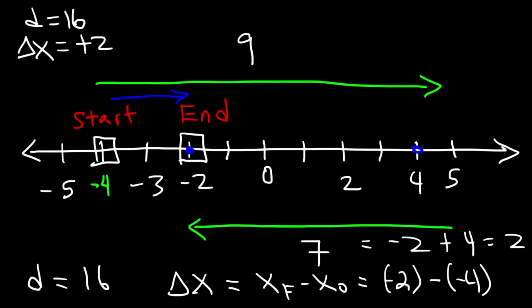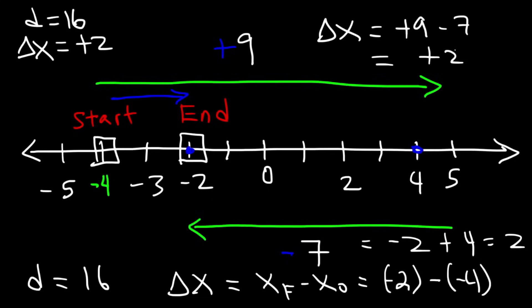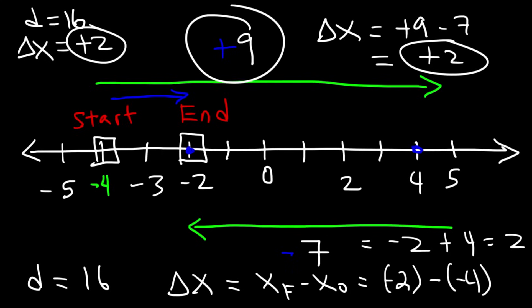Displacement is just the distance between the final position and the initial position. Breaking it into two parts: the displacement for the first part is positive 9, and for the second part it's negative 7. Adding positive 9 and negative 7 gives a net displacement of positive 2. To find the total distance instead, make both numbers positive: 9 plus 7 equals 16. This should help you distinguish distance from displacement.